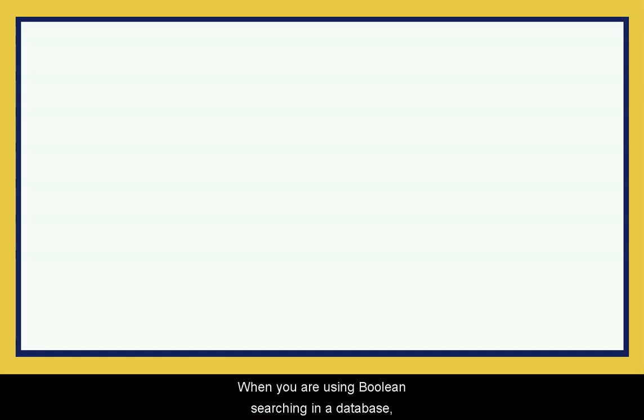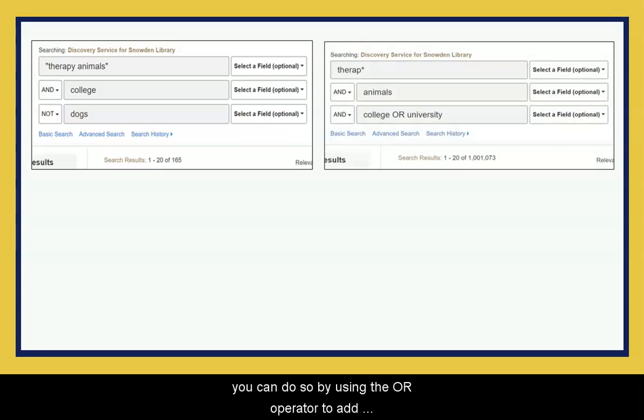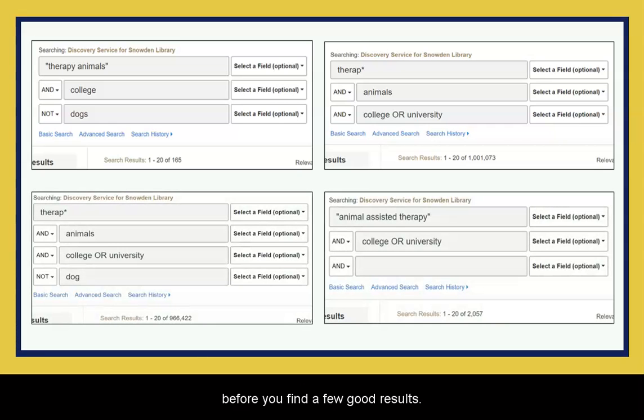When you are using Boolean searching in a database, it is important to play around with your search. Try a narrow search first with quotation marks and the AND operator as needed and see what kind of results you get. If you get too few results and need to broaden your search, you can do so by using the OR operator to add synonyms. Expect to try a few searches before you find a few good results. The perfect article may not exist, and the next best thing may not be on the first page of your results.